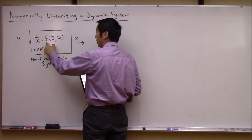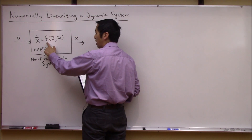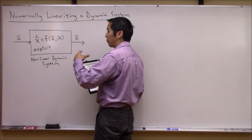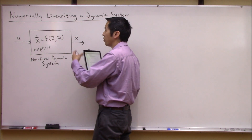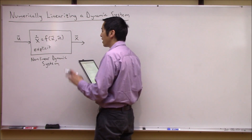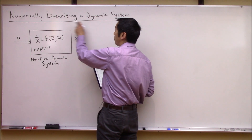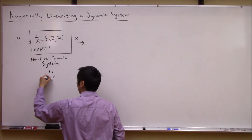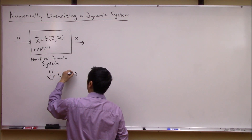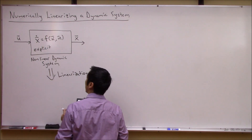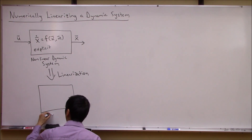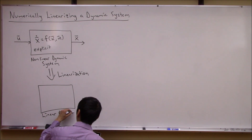So we basically have X dot equal to some nonlinear function of the states and the controls. This is my dynamic system. It's nonlinear because this F term could be really anything — describing an aircraft, a simple pendulum, a cart, a set of virus dynamics. It could really be anything; it's very generic. What I want to do is linearize this. Through a process called linearization, I want to turn this nonlinear complicated model into a somewhat simpler, linear dynamic system.